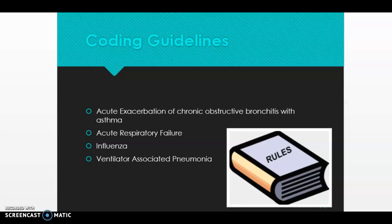The coding guidelines are very short for as complicated as this system might be, but I do want to highlight a few of them. The coding guidelines are always in the front of your ICD-10-CM codebook. In my codebook, the chapter-specific guidelines start on page six — that's section C of the official coding guidelines. The respiratory system is chapter 10, so you want to go to C then 10. There are guidelines A, B, C, and D — only four — found on pages 14 and 15.